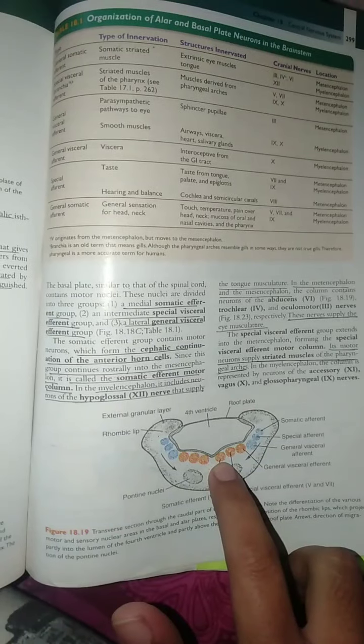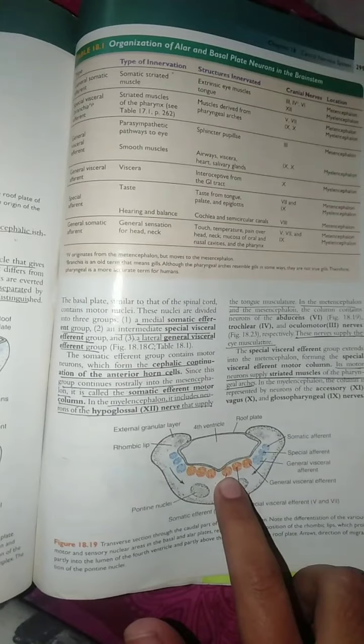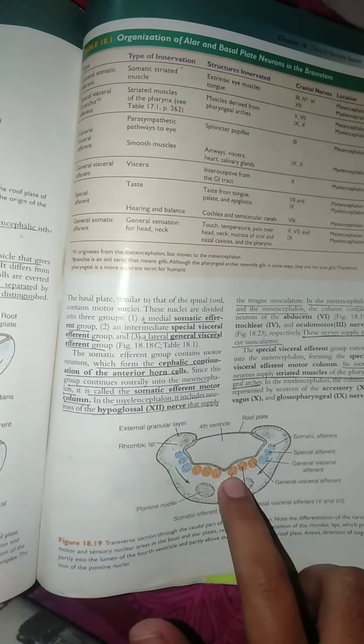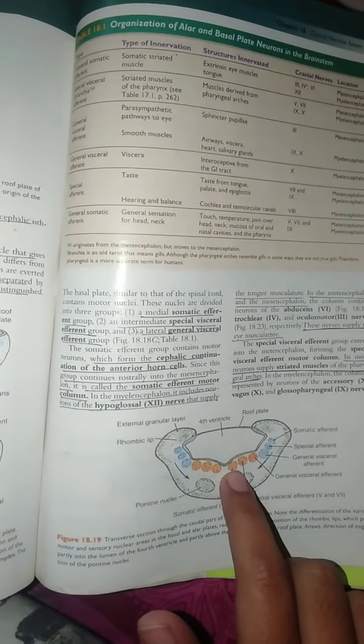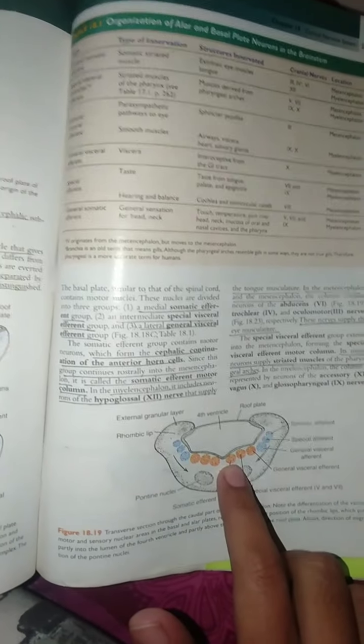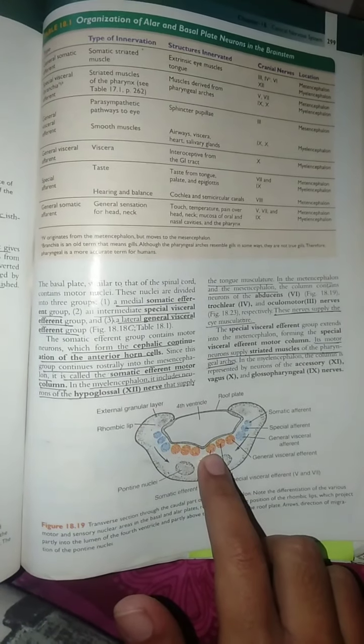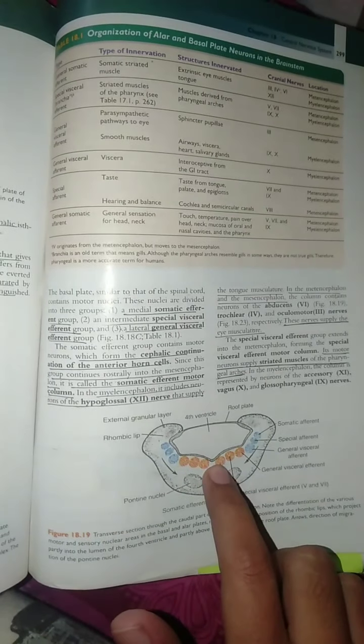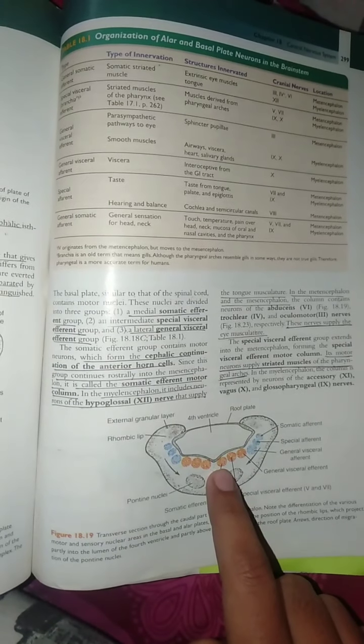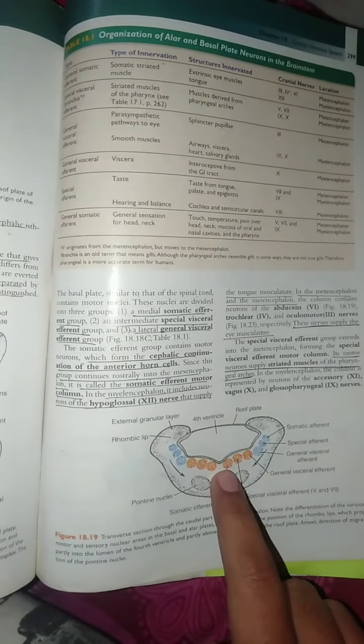We have neurons known as the hypoglossal nerve nucleus. Now we have myelencephalon to the medial efferent. This is a part of mesencephalon, so we have seen that myelencephalon has the hypoglossal nerve, but mesencephalon has neurons present.